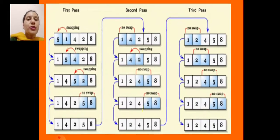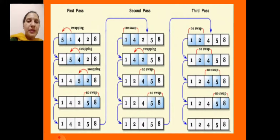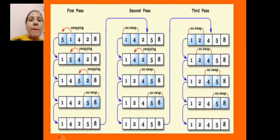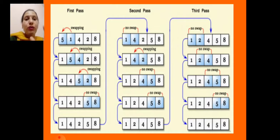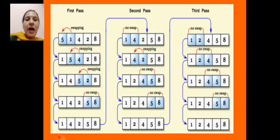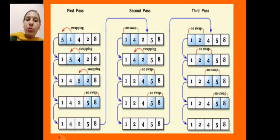Suppose we have a list and the elements of the list are 5, 1, 4, 2, 8, and we want to sort these elements into ascending order by using bubble sort. What do we do in bubble sort? We compare the adjacent elements. In the first pass, we compare the first element 5 and 1. Since 5 is greater than 1, a swap will occur. Now we compare 5 and 4. Again, 5 is greater than 4, so a swap will occur.